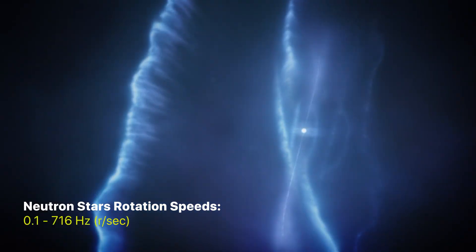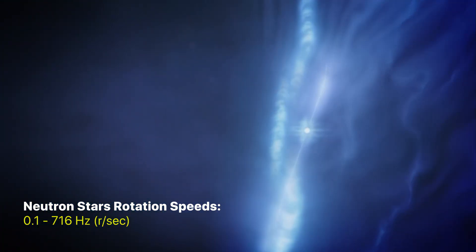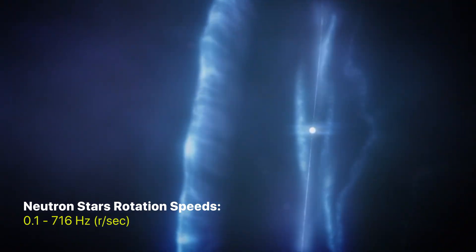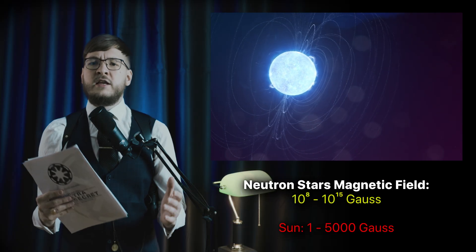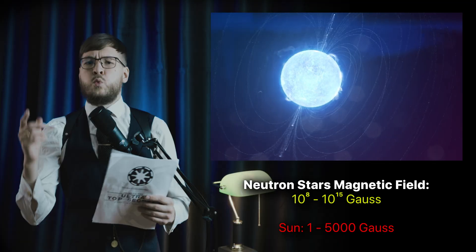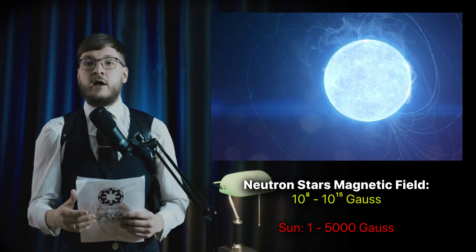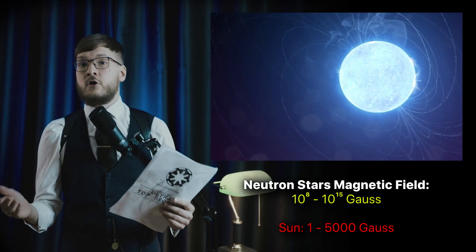They are rapidly rotating, up to 1000 rotations per second, compared to one rotation per month for the sun. They are strongly magnetized, up to 1 trillion gauss, compared to an average of 1 gauss for the sun and 0.5 gauss for the earth.